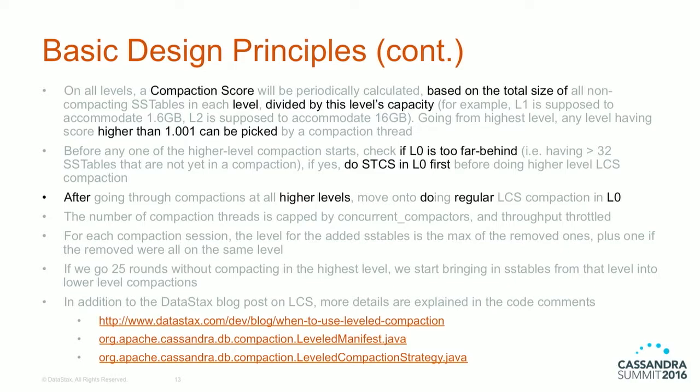If the compaction score is greater than 1.001, that level will receive attention from Level Compaction and compaction will start. Another rule: if L0 is too far behind — meaning if L0 ever has more than 32 SSTables — it will always try to do size-tiered compaction in Level 0 first. After going through from highest level to lowest level, there's a chance to do a Level 0 regular compaction to do an L0 to L1 up-level.